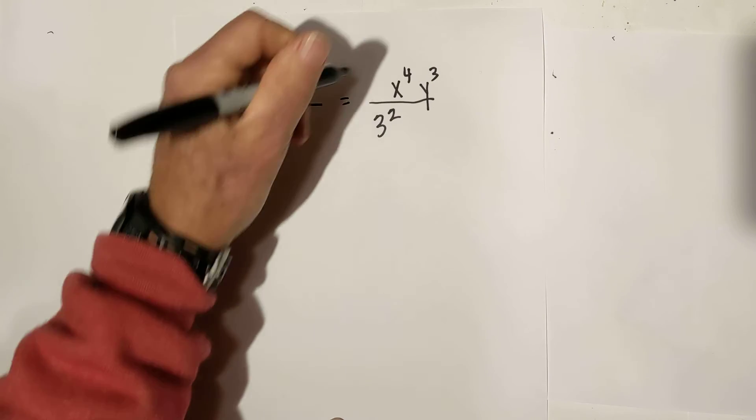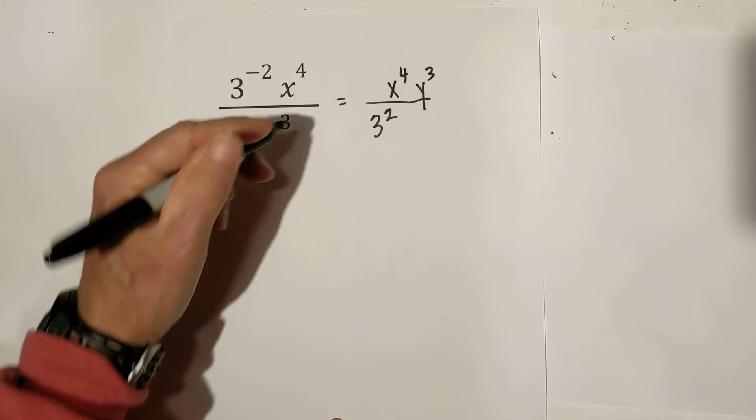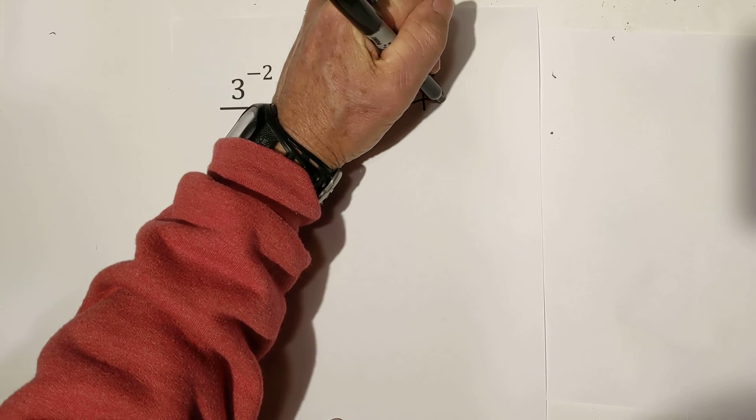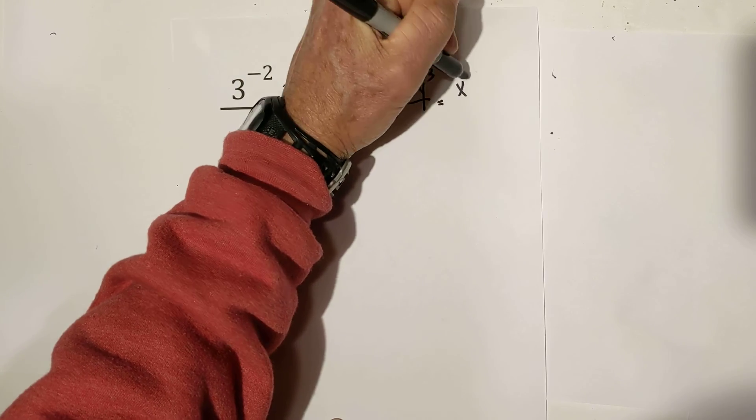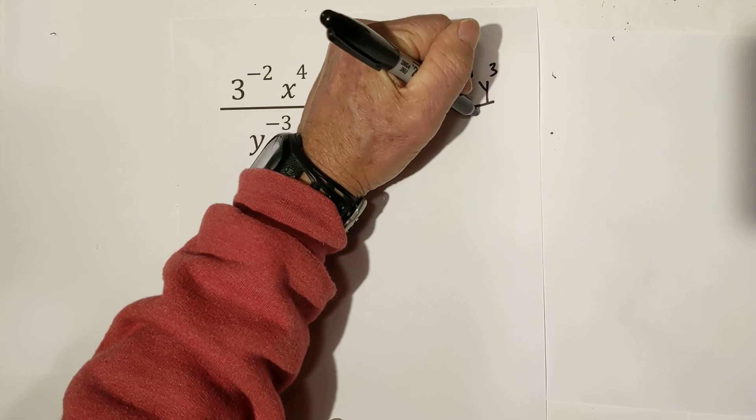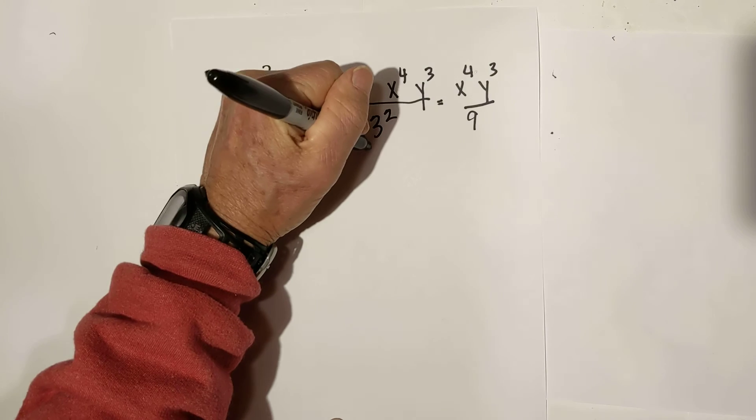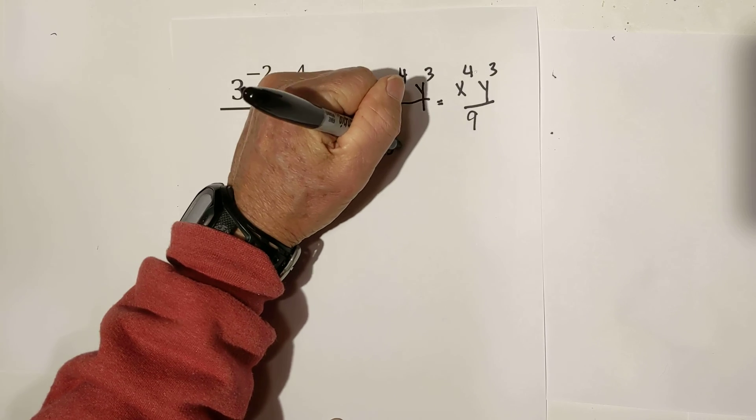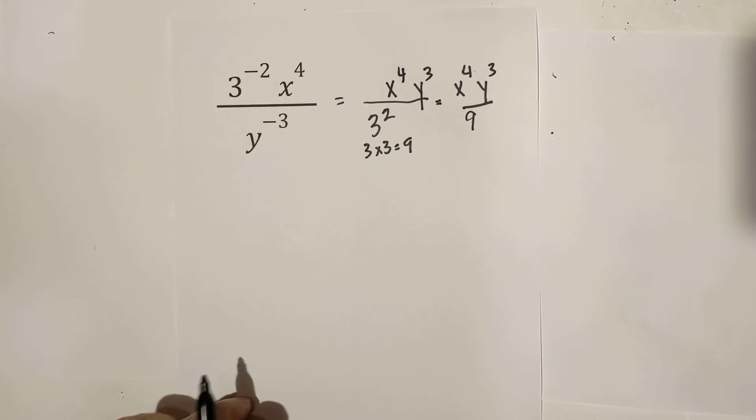And we can further simplify a little bit more. The top is going to remain the same. x to the 4th, y to the 3rd, and then 3 squared is 9, because 3 times 3 equals 9.